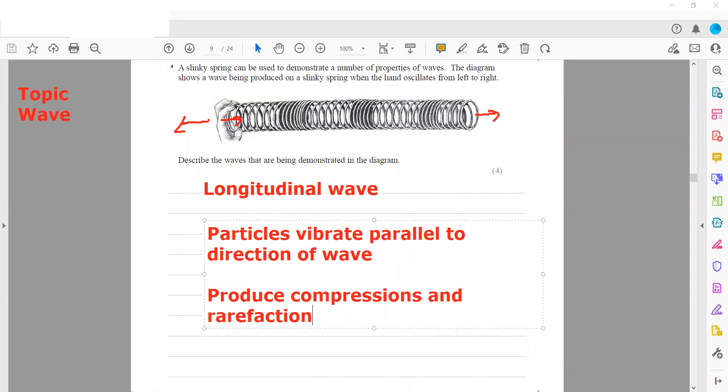Compression means a region of high pressure, whereas rarefaction means a region of low pressure.